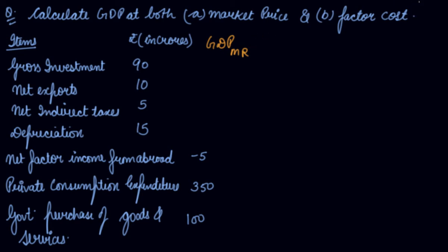From the expenditure method, you get GDP at MP. The formula is: final consumption expenditure plus gross domestic capital formation (gross investments) plus exports minus imports plus government expenditure equals GDP at MP. Here we are given gross investment of 90.